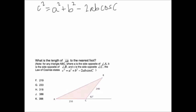Little b is 210. And then times 2 times a times b times the cosine of 118. That's why we needed to find that.